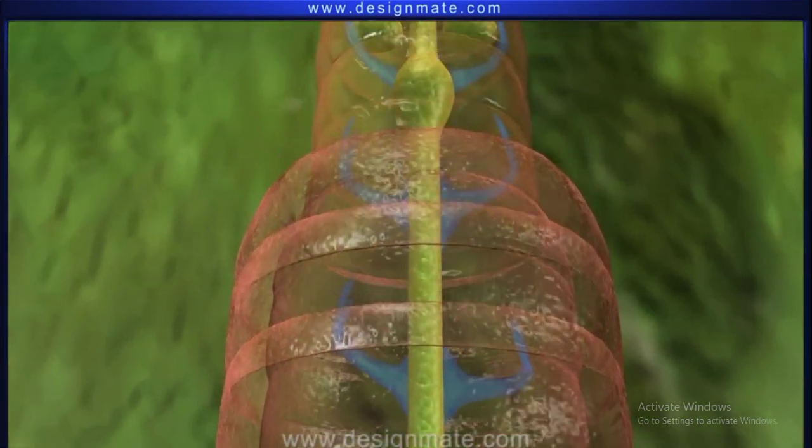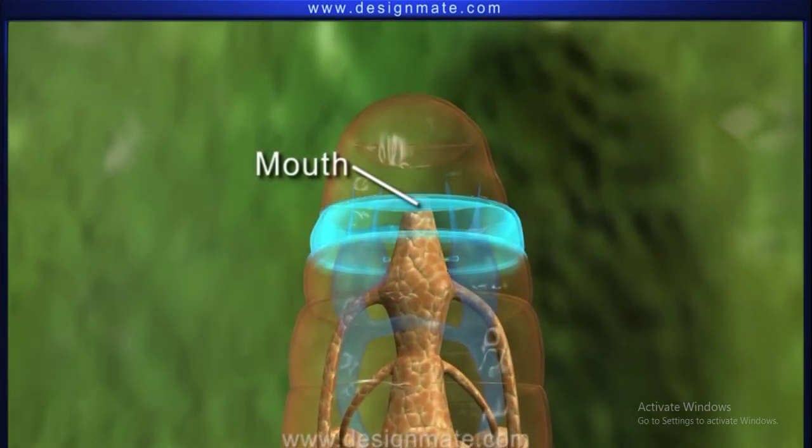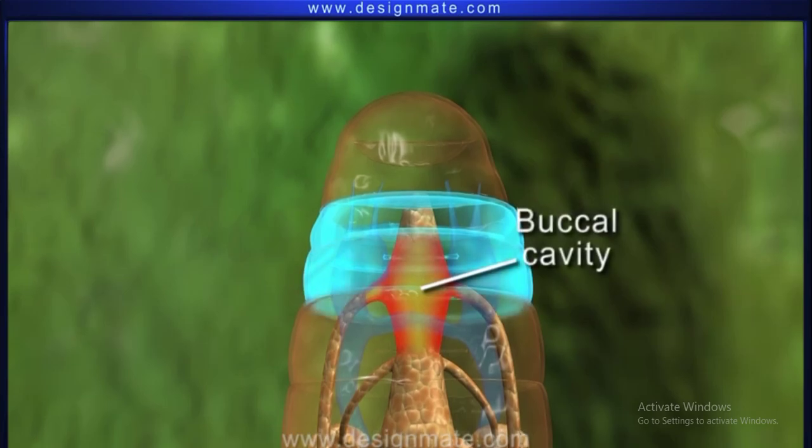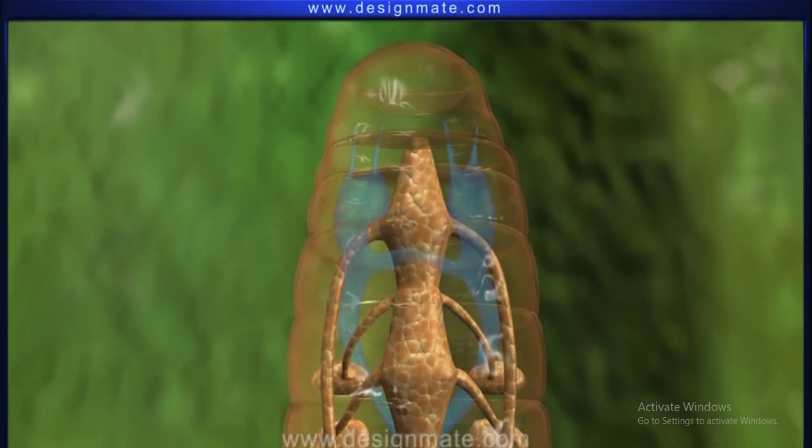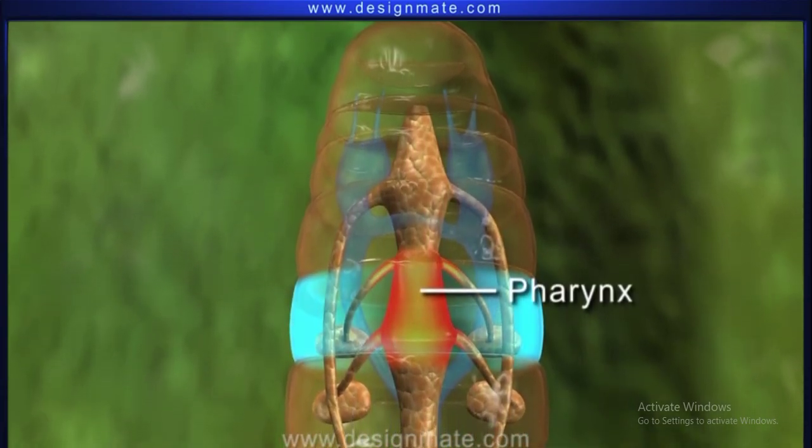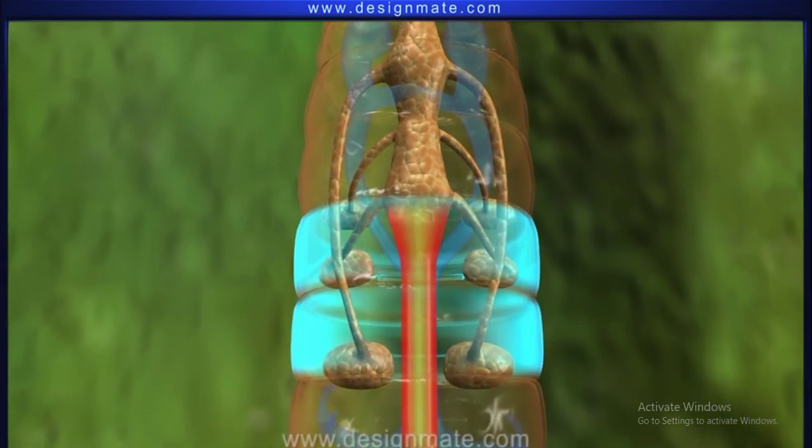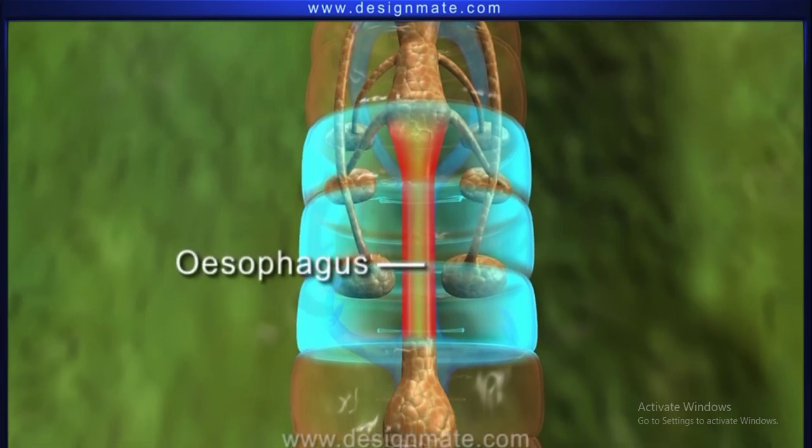Located at its anterior end is the mouth, which opens into the buccal cavity. The buccal cavity leads to the pharynx in the 4th segment, which continues down the 5th to the 7th segment as a small narrow tube called esophagus.